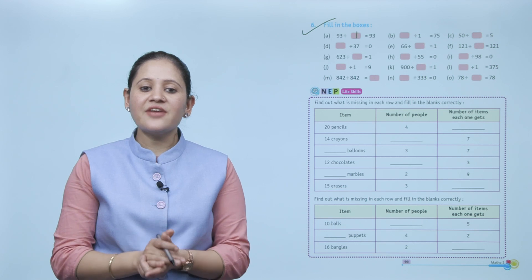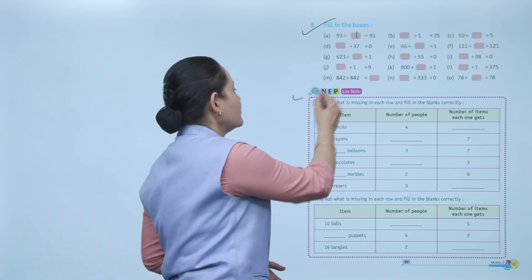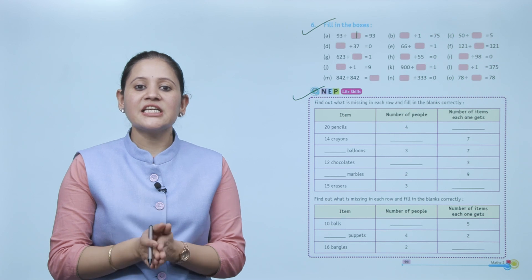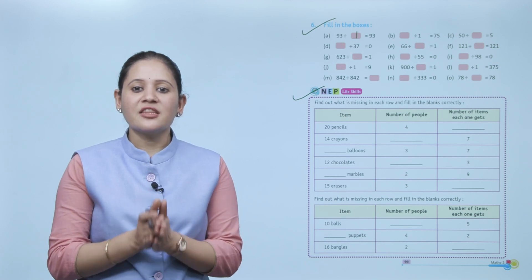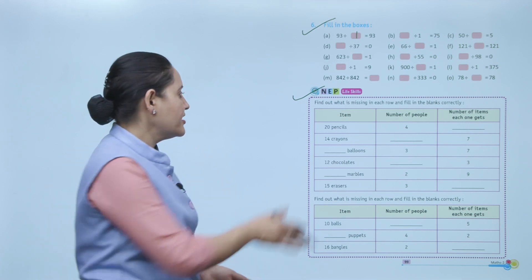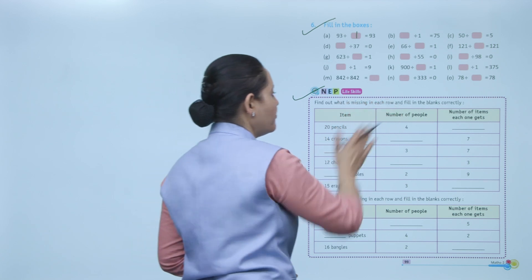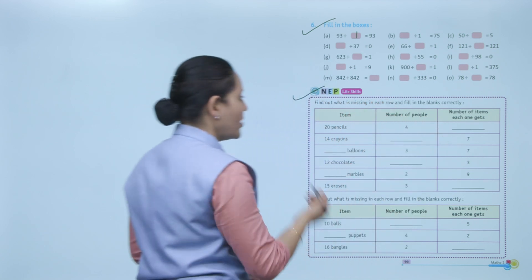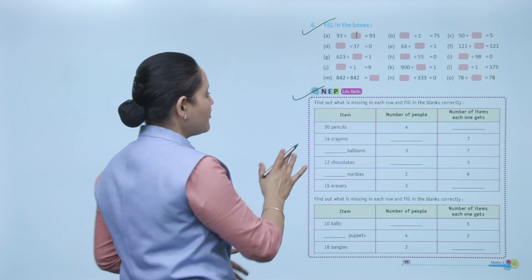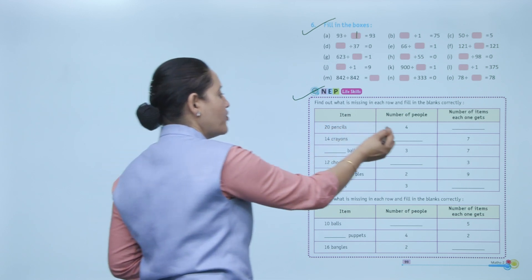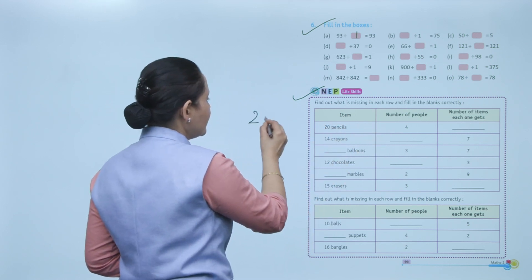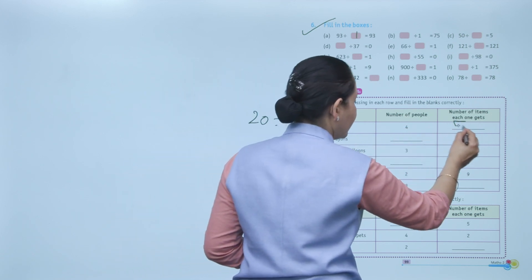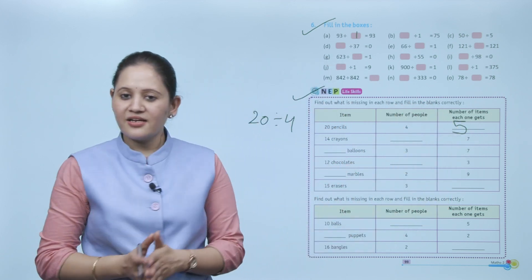Life skills section: fill in the blanks. Some items are given with the number of people and the number of items each person gets. 20 pencils divided among 4 people — 20 ÷ 4 means each person gets 5 pencils.